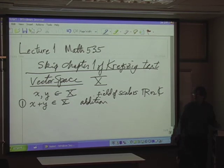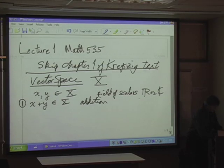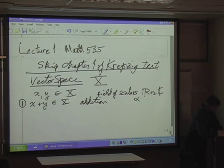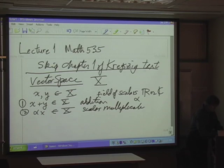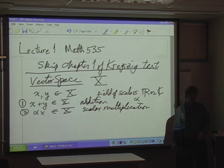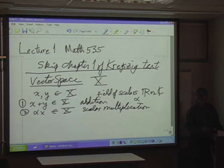So addition: you can add the vectors and stay in the vector space. You can also scale and multiply. The notation is a lot of what's going on here in these first lectures. Alpha is going to be the author's notation for a scalar. So we'll have alpha x is in the space - scalar multiplication. By the way, pipe in anytime you want. This is just a test of the new system, so I'm being really careful with my words. Usually I babble on and on, but I'm trying to control myself a little bit.